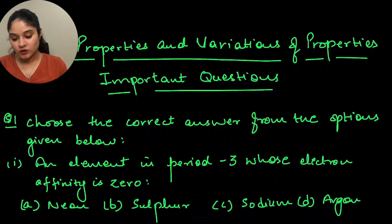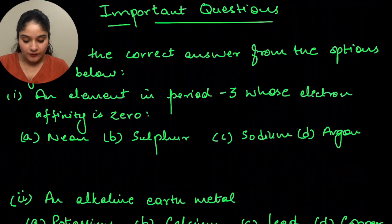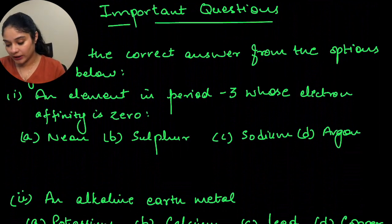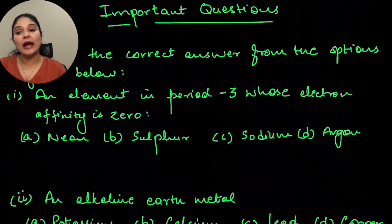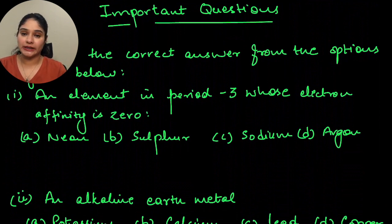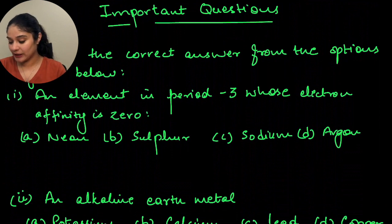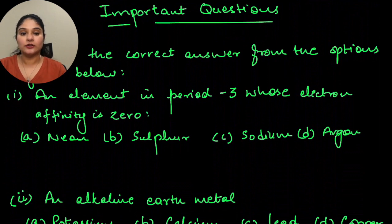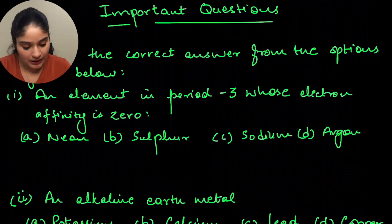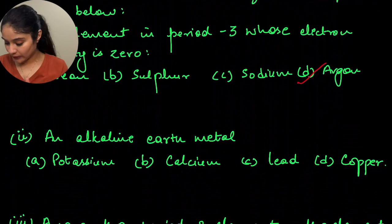The first question says: choose the correct answer from the options given below. The first is an element in period 3 whose electron affinity is 0. Electron affinity is the ability to add an electron — how much energy is released when you are adding an electron. If some element has electron affinity as 0, that means the outermost octet is complete. From the options, argon is listed from the inert gas section, so the answer would be argon, that is option D.